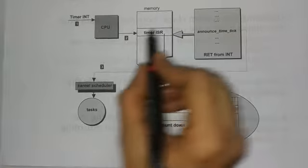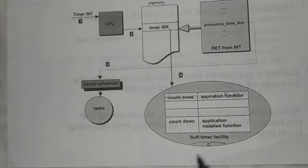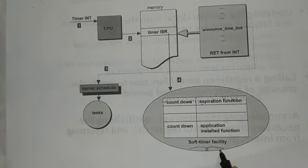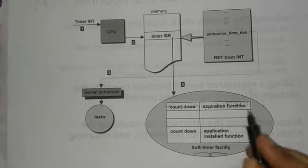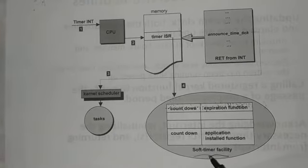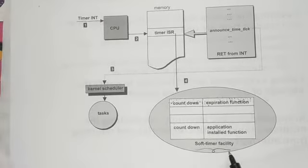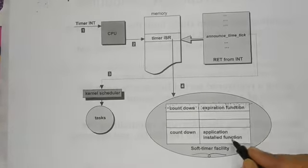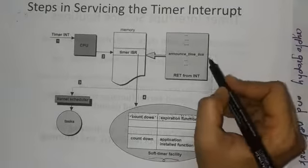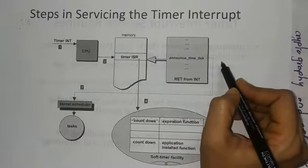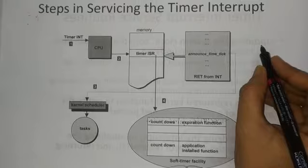The timer ISR is maintained by the soft timer function. Soft timers were discussed in the previous section and have three properties: countdown maintenance, countdown initialization, and countdown removal. Here we also introduce the soft timer facility for maintaining expiration function specification and application-installed functions. These values are specified using countdown functions. All restrictions placed on an ISR are also applicable to the announce time tick function.